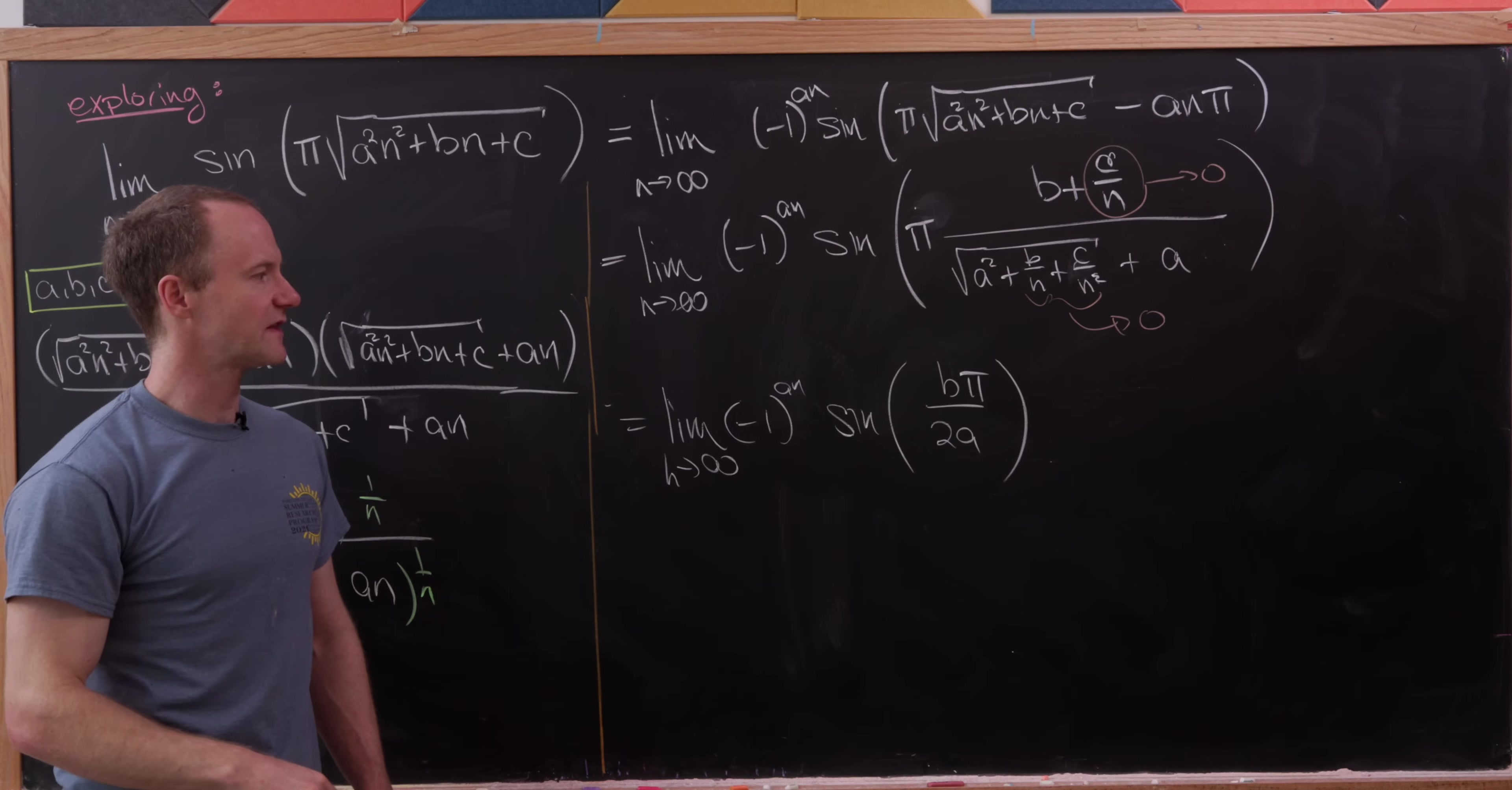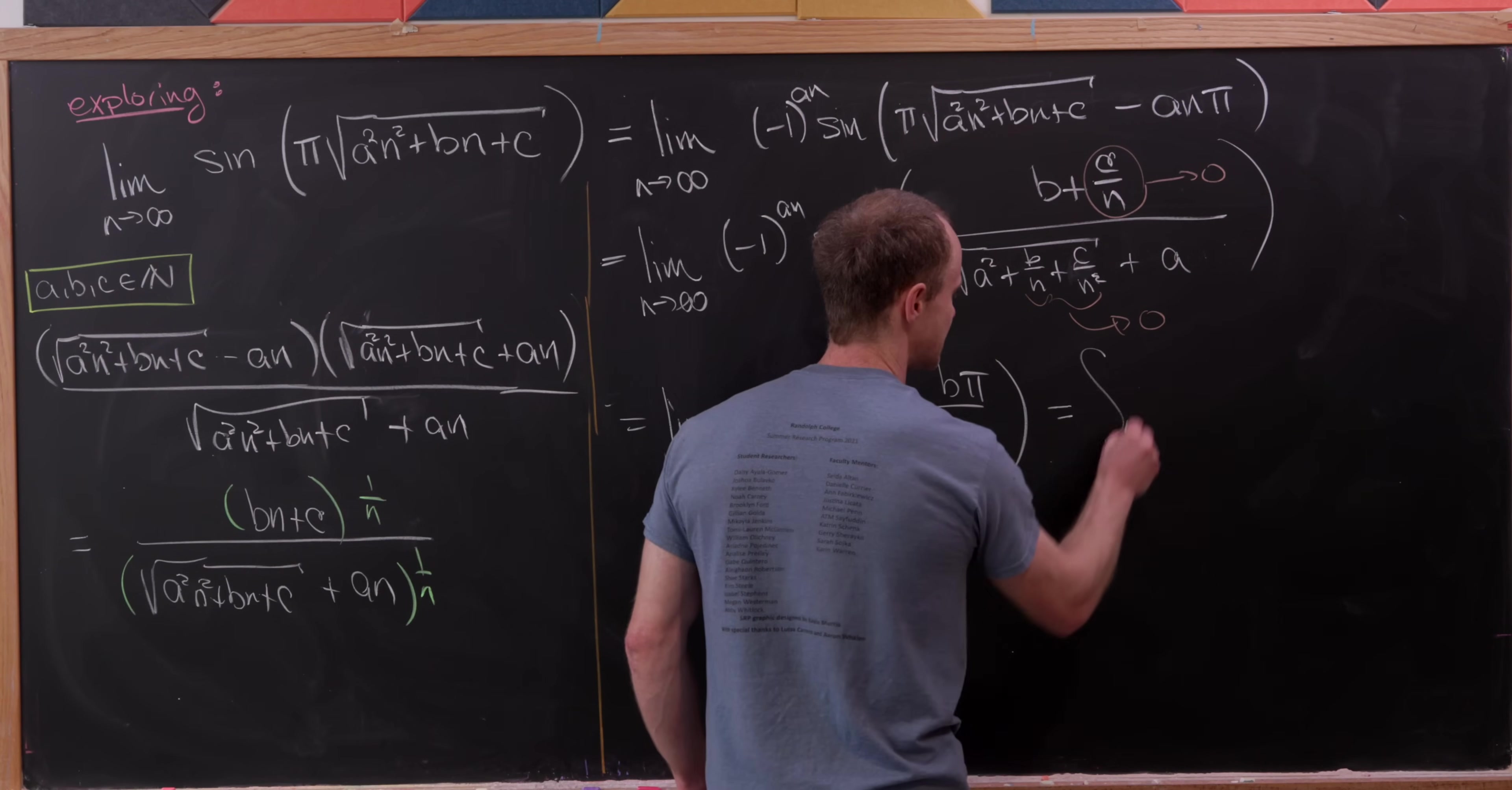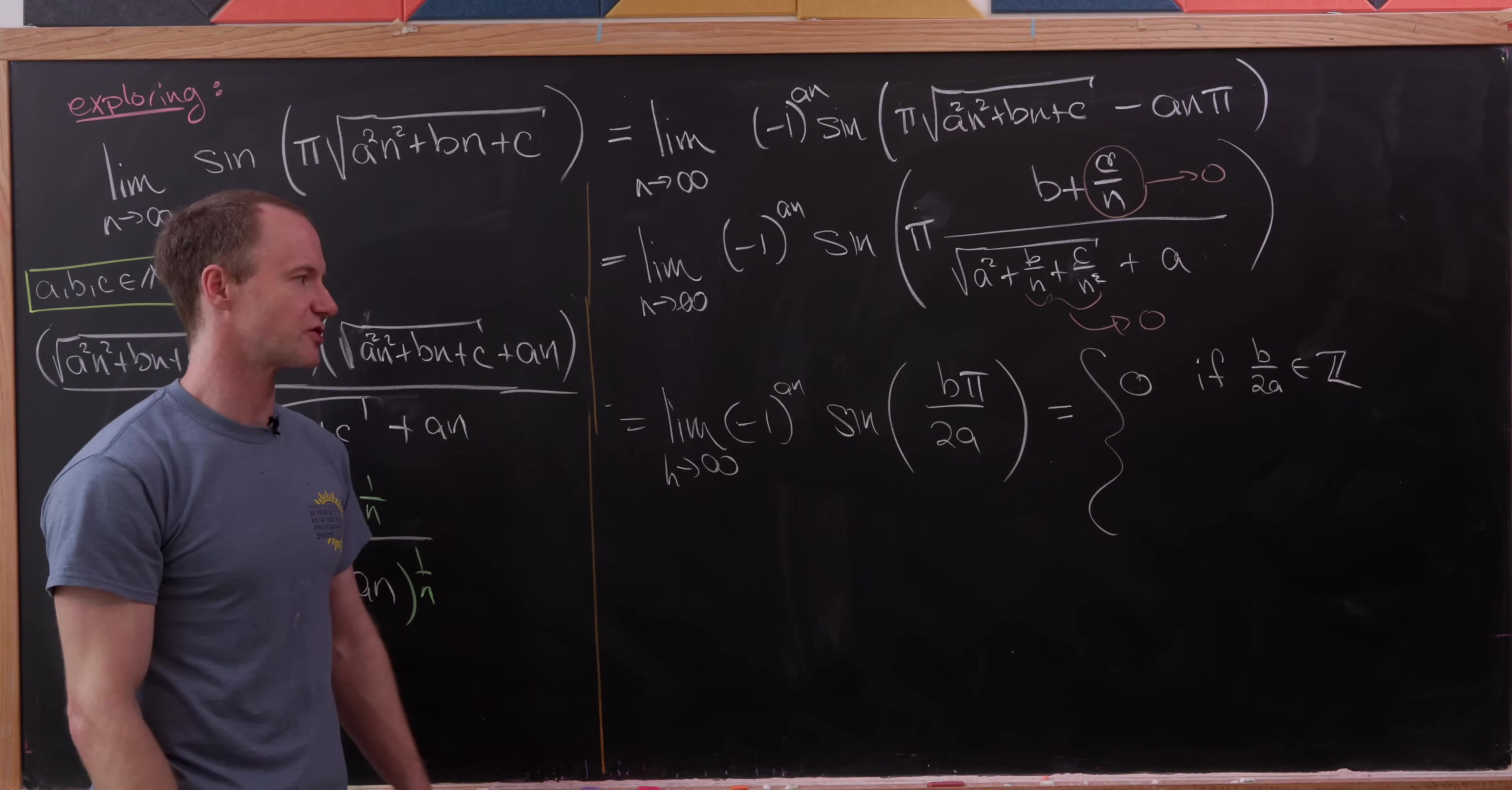Now let's look at this and observe that if b over 2a is an integer, then this sine value is equal to zero and we have a limit. So this equals zero if b over 2a is an integer, because we've got sine of an integer multiple of π.